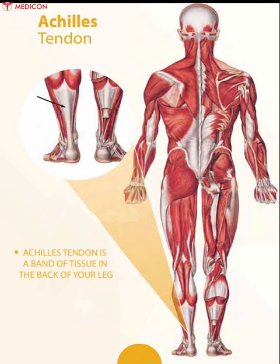Achilles is a tendon — a band of tissue in the back of your leg. This tendon links your heel bone to your calf muscle. It is also called the calcanean tendon and lies close to the middle of the calf. The calf is the back of the leg below the knee.